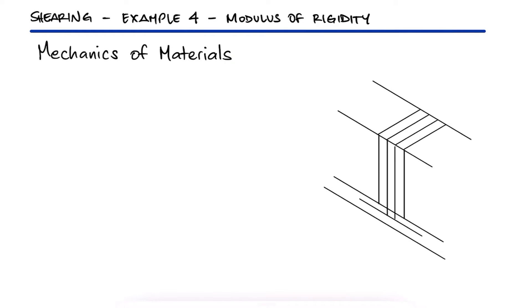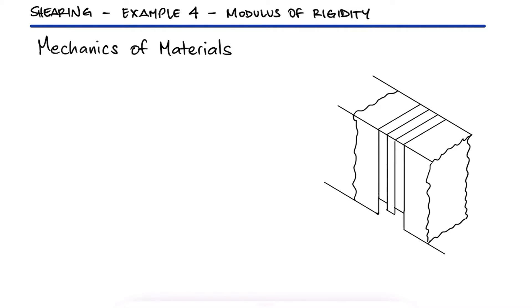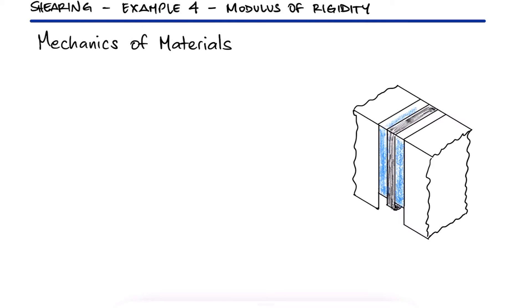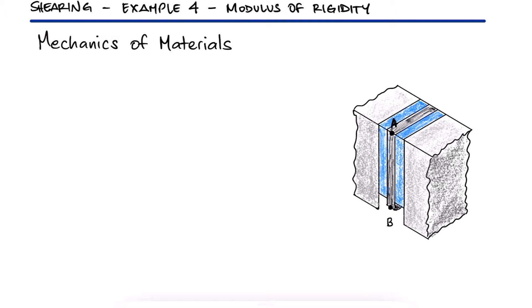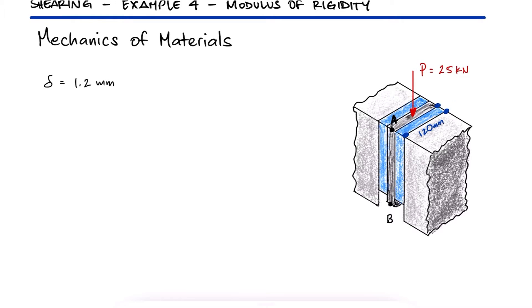A vibration isolation unit consists of two blocks of hard rubber bonded to a plate AB and two rigid supports as shown. Knowing that a 25 kN force causes plate AB to deflect 1.2 mm, what is the modulus of rigidity, or the shear modulus, of the rubber blocks?